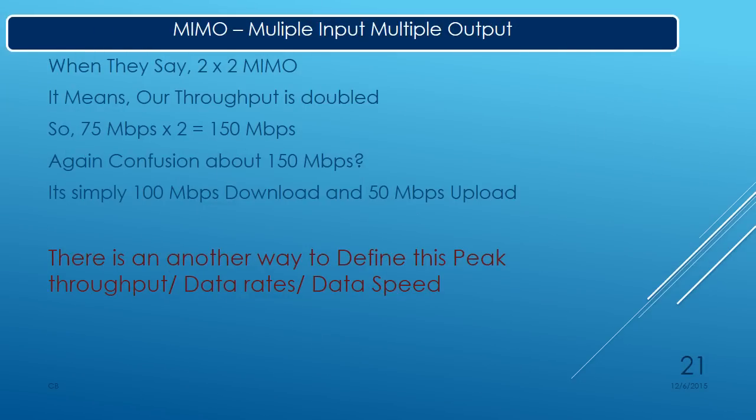Here comes MIMO — Multiple Input Multiple Output. MIMO is a huge topic that deserves its own presentation. Just remember one basic thing: when we use 2x2 MIMO, our throughput is doubled. We have already calculated 75 Mbps — multiply it by 2 and you get 150 Mbps. From that, 100 Mbps is given for download and 50 Mbps for upload.